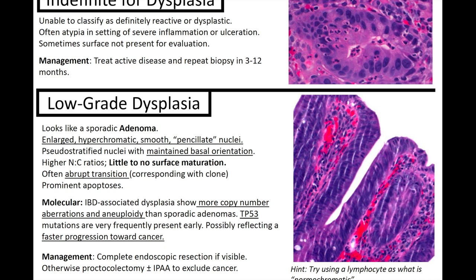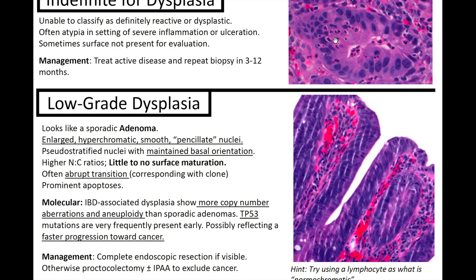There are cases that can be called 'indefinite for dysplasia' — when you're unable to classify tissue as definitively reactive or dysplastic. This often occurs with atypia in a setting of severe inflammation or ulceration. For example, the nuclei may look abnormal — elongated, hyperchromatic, not totally benign — but there's a lot of inflammation with many neutrophils in the crypt. Perhaps it's just a reactive process, but we're not sure. We don't want to chalk it up as reactive if it's actually an early dysplastic process, so 'indefinite for dysplasia' is the appropriate fallback.